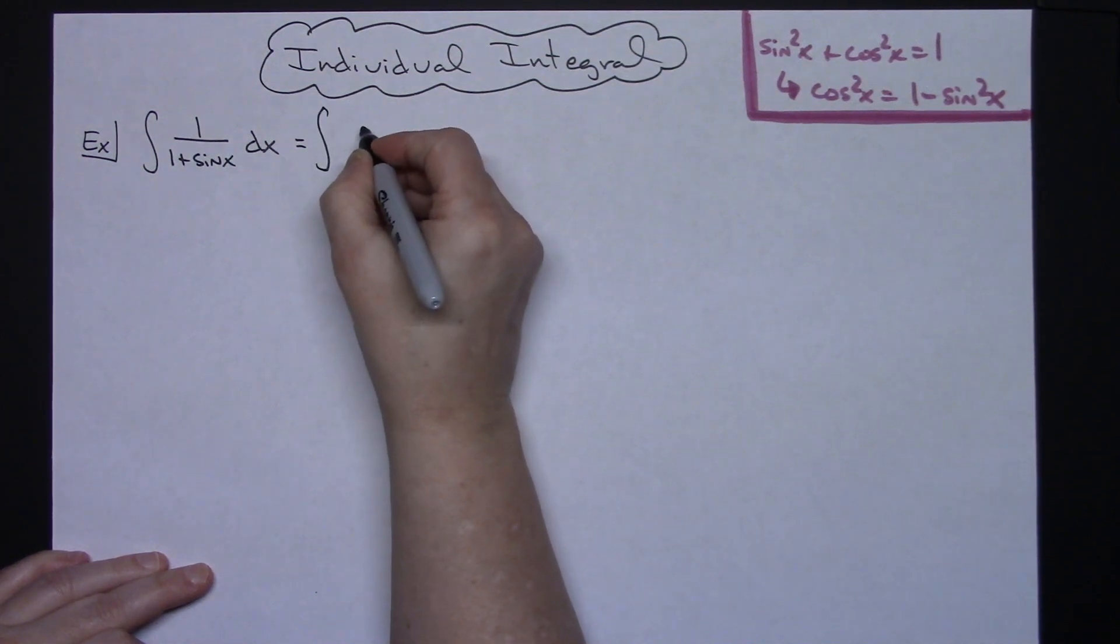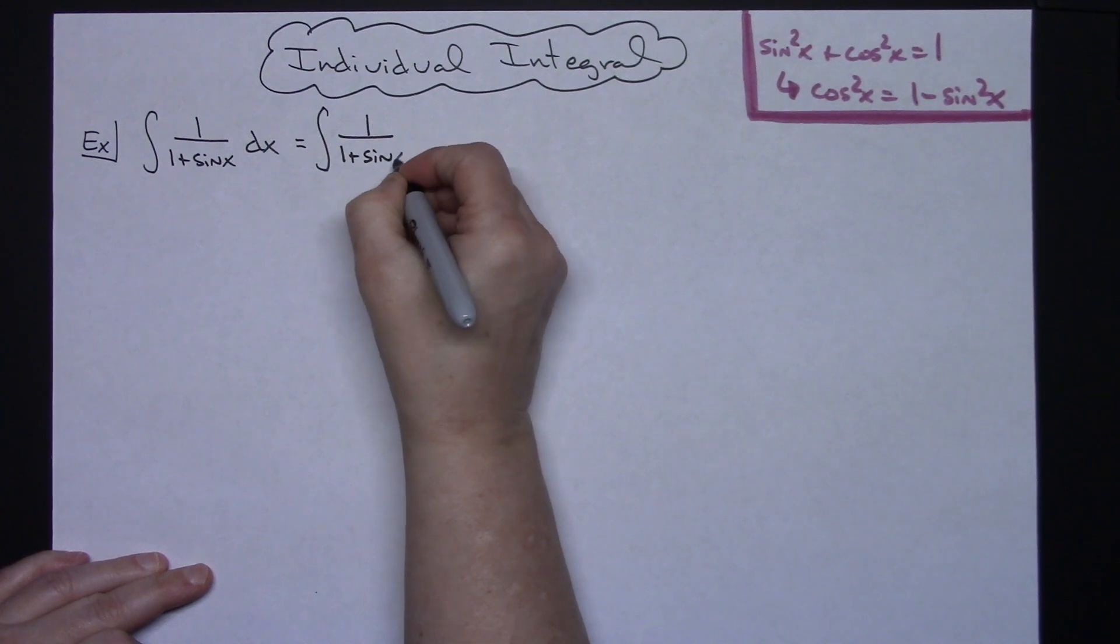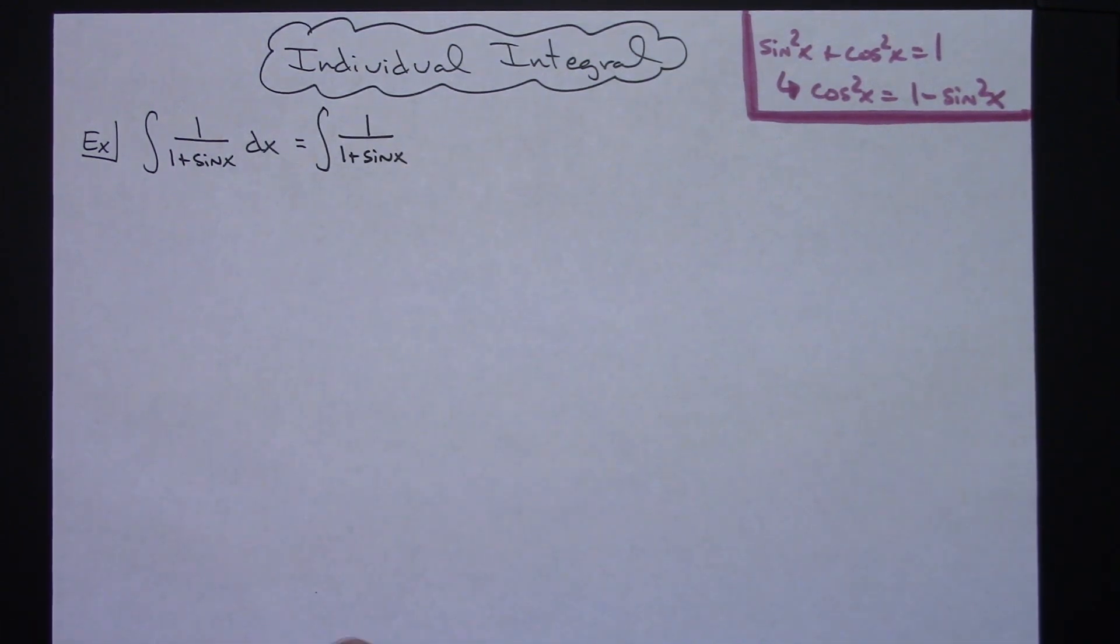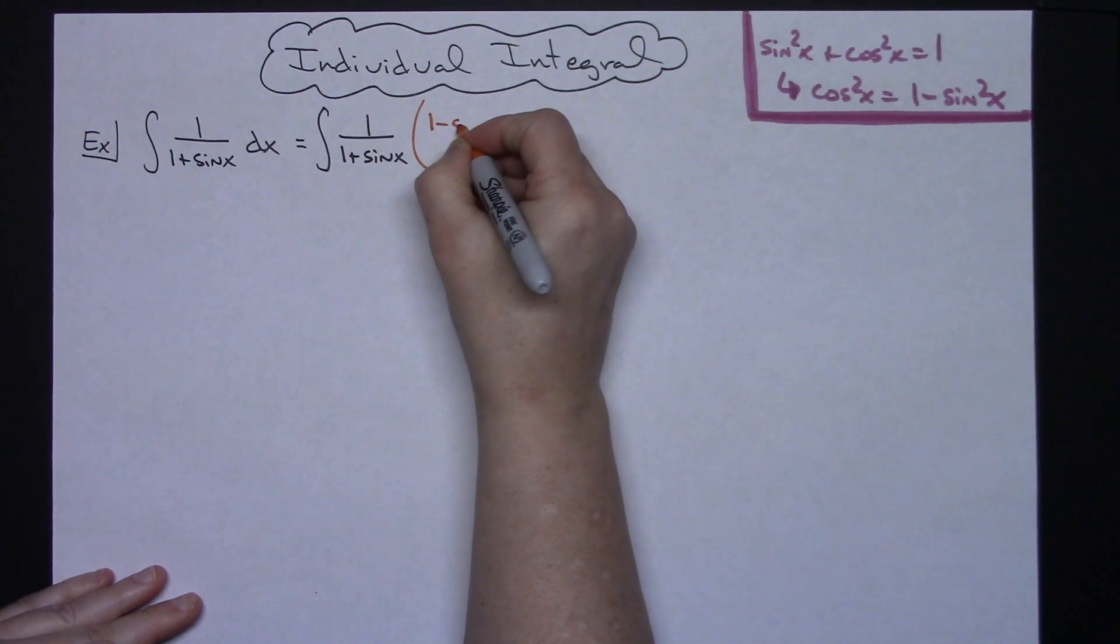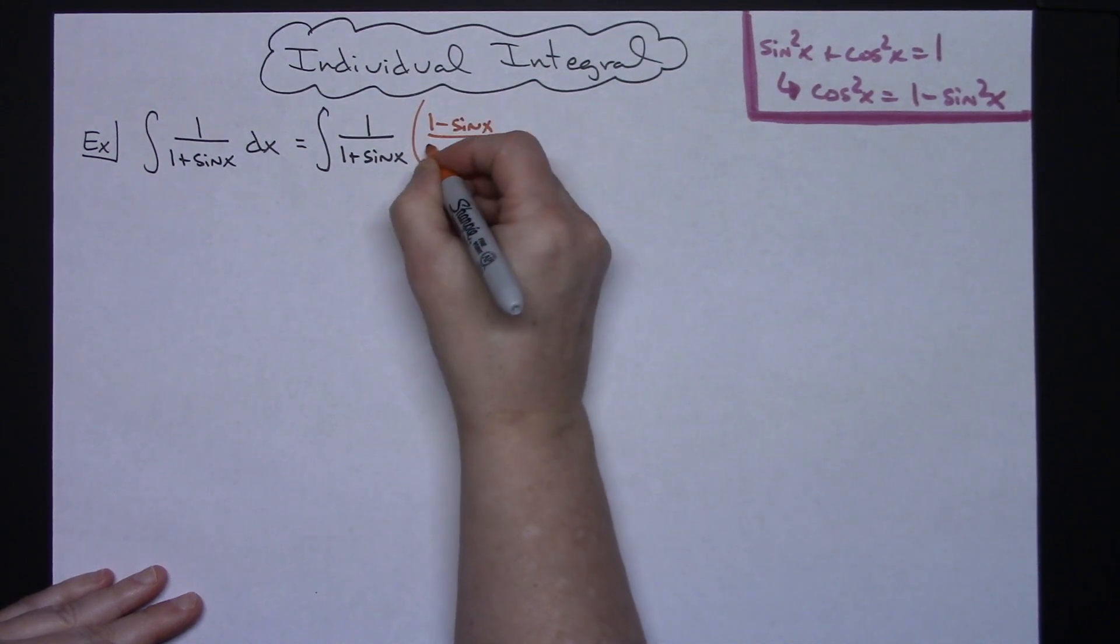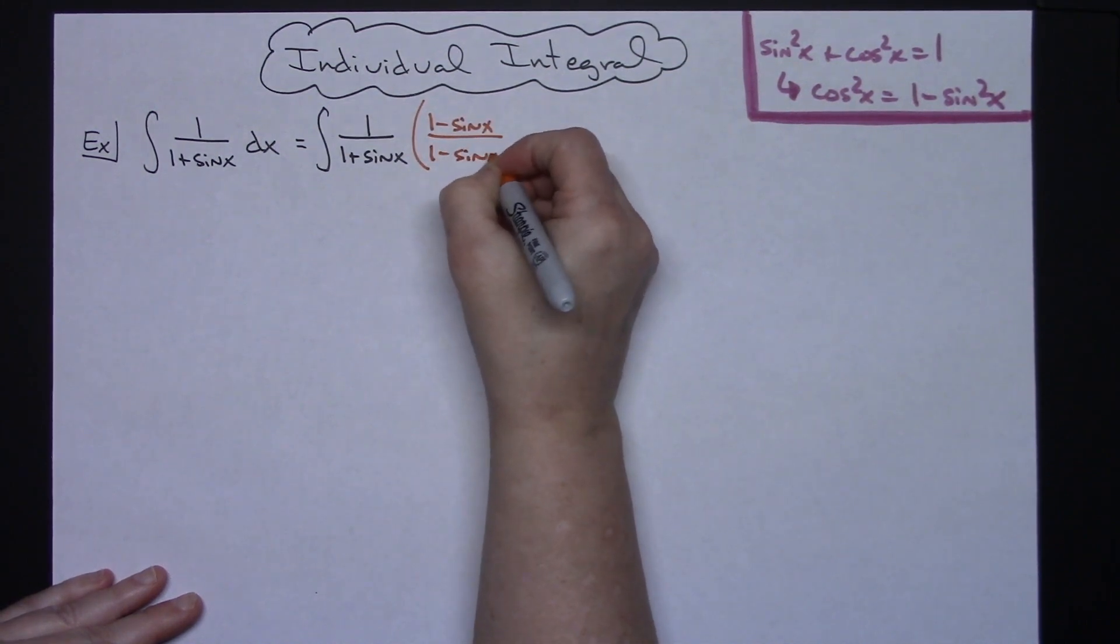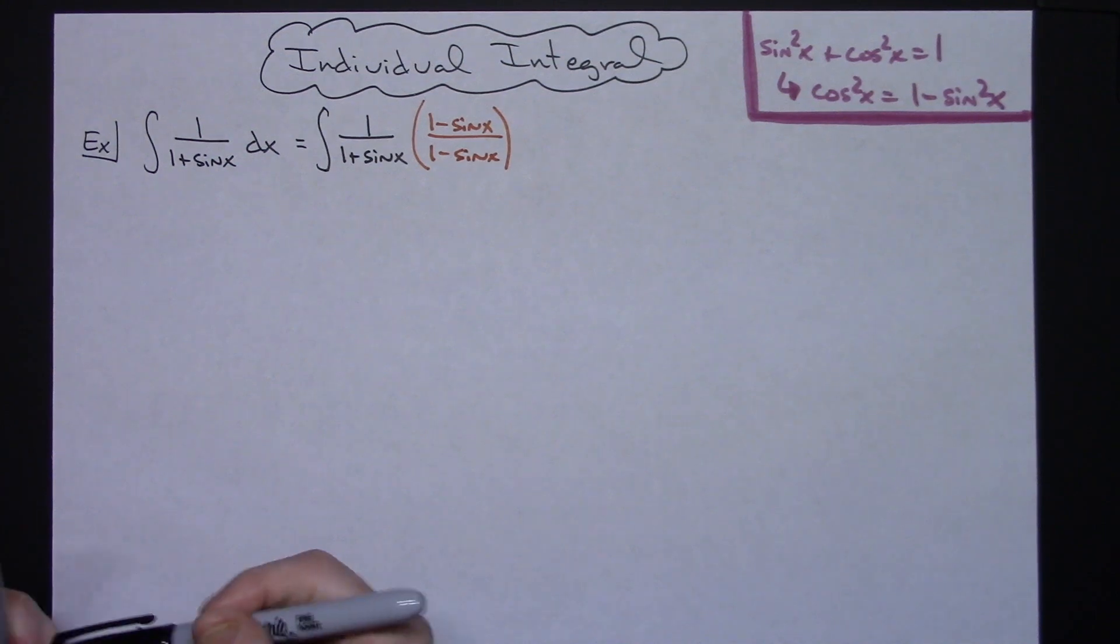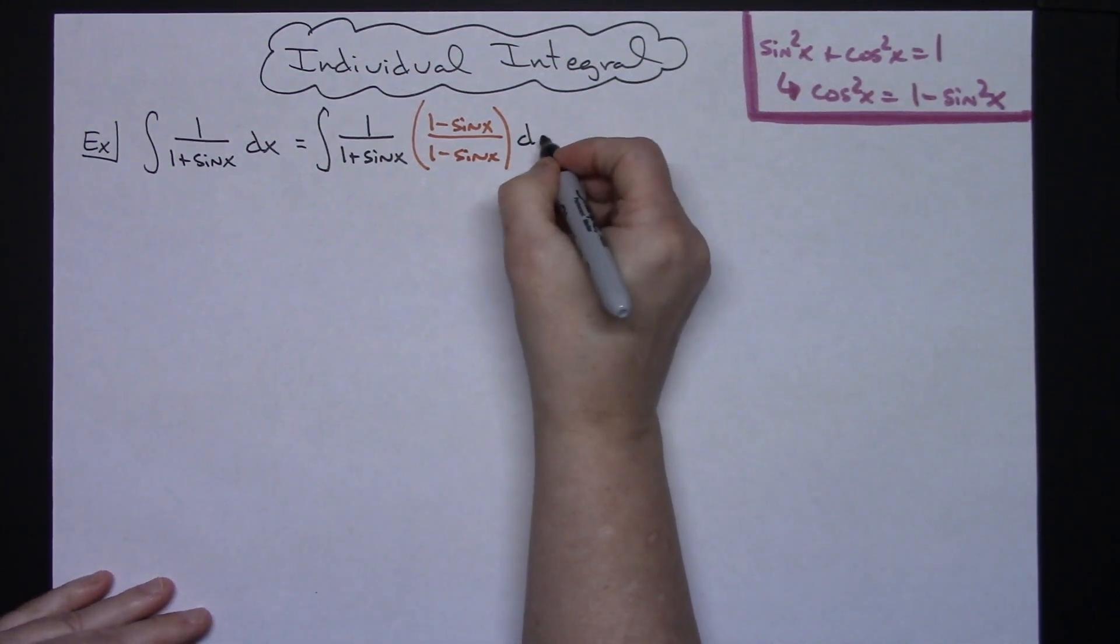So first thing I'm going to do is multiply by that conjugate so I'm going to rewrite here 1 over 1 plus sine x and then I'm going to multiply by the conjugate so 1 minus sine x over 1 minus sine x there in the denominator and then dx of course on the end of that.